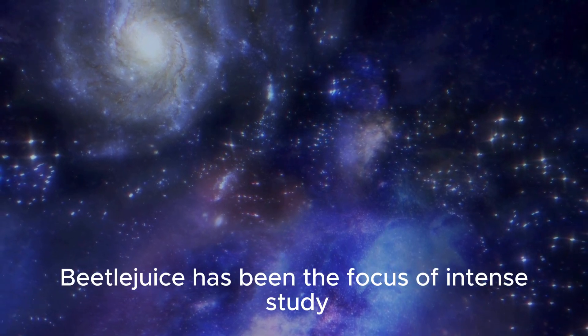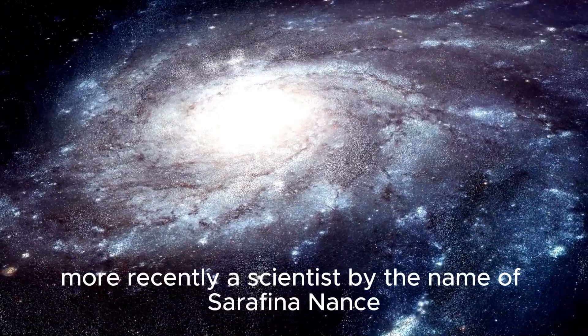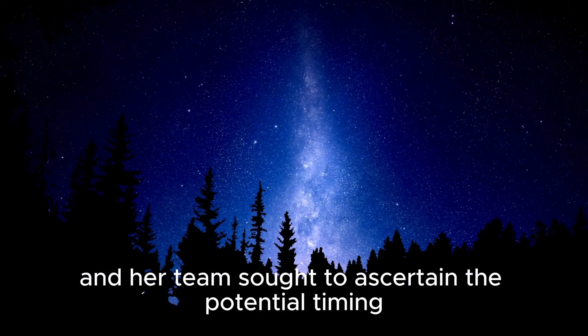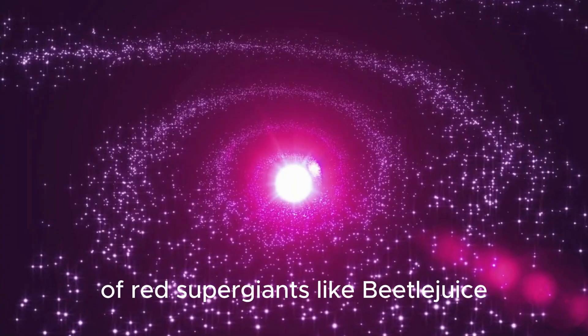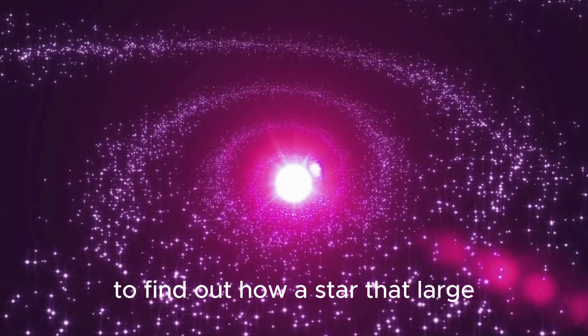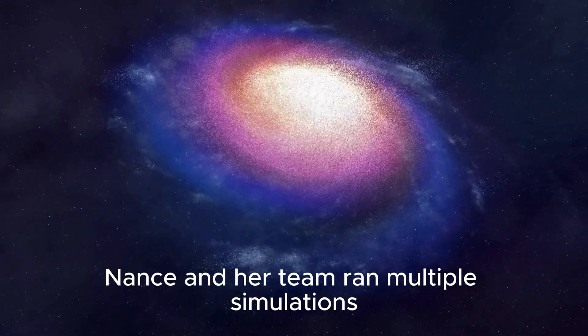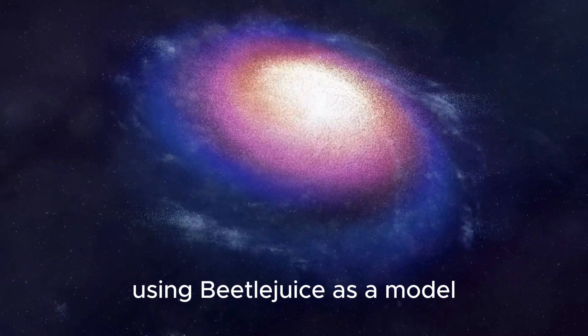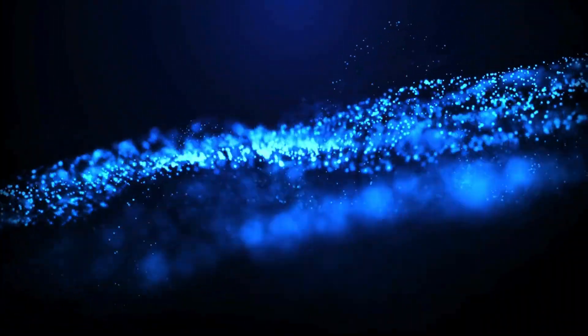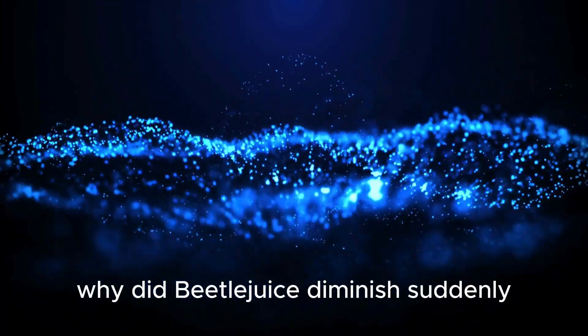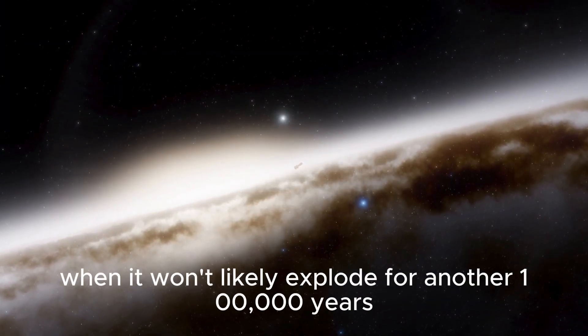Betelgeuse has been the focus of intense study since the 1st century BC. More recently, a scientist by the name of Jocelyn Nance and her team sought to ascertain the potential timing of the supernova explosions of red supergiants like Betelgeuse to find out how a star that large would behave over time. Nance and her team ran multiple simulations using Betelgeuse as a model. They then contrasted their findings with field observations. Why did Betelgeuse diminish suddenly and out of sync with its regular cycle when it won't likely explode for another 100,000 years?